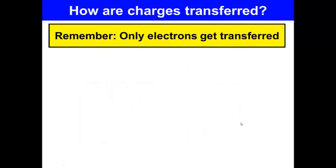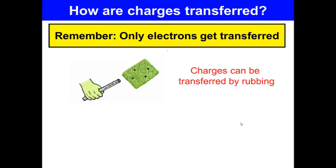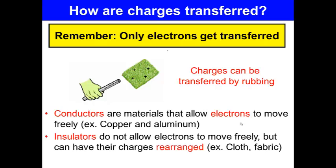How are charges transferred? Remember, only electrons get transferred. So here's the wand is negative, the cloth is positive. Charges can be transferred by rubbing. Conductors are materials that allow electrons to move freely, so things like copper and aluminum. Insulators do not allow electrons to move freely, but can have their charges rearranged, so things like cloth and fabric.